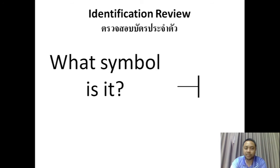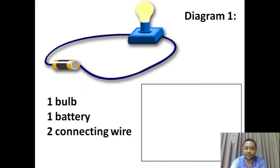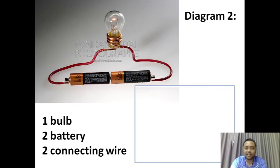What is it? It's a connecting wire. What symbol is it? It's a battery. What symbol is it? It's a positive terminal. What symbol is it? It's a negative terminal. So now you can draw the circuit diagram using the symbols I already taught you.